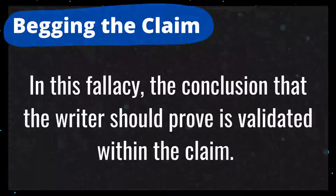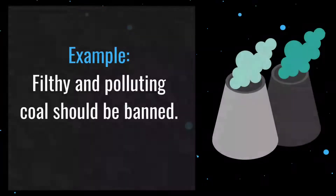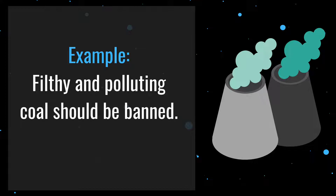Number 5 is begging the claim. In this fallacy, the conclusion that the writer should prove is validated within the claim itself. For example: filthy and polluting coal should be banned. Arguing that coal pollutes the earth and thus should be banned would be logical. But the very conclusion that should be proven — that coal causes enough pollution to warrant banning — is already assumed in the claim by referring to it as filthy and polluting.